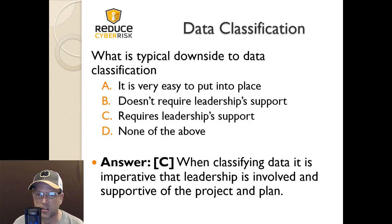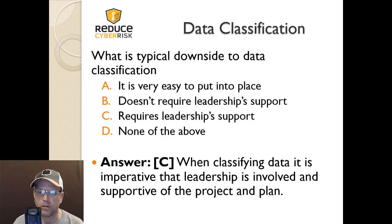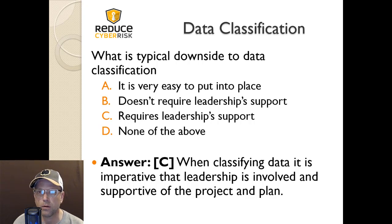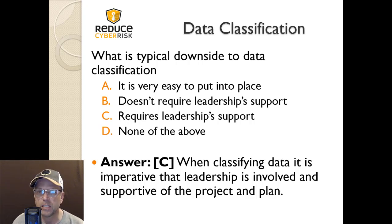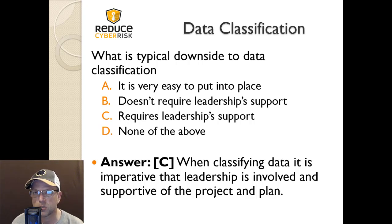C is the answer. When classifying data, it is imperative that leadership is involved and supportive of the project and plan. If you don't have their support, it's dead on arrival — it ain't gonna happen. Data classification is a hard process to accomplish; it takes a lot of support and an orchestrated, planned effort to make it happen.